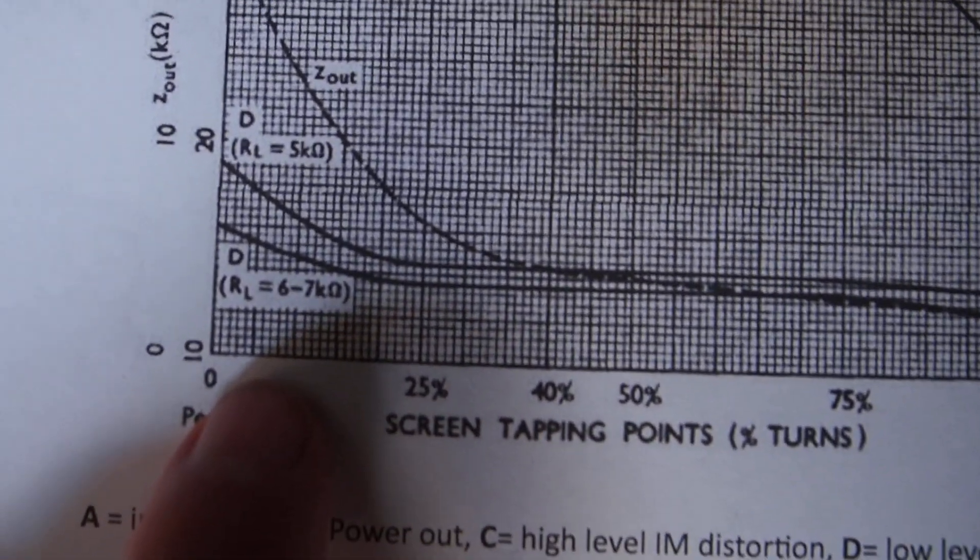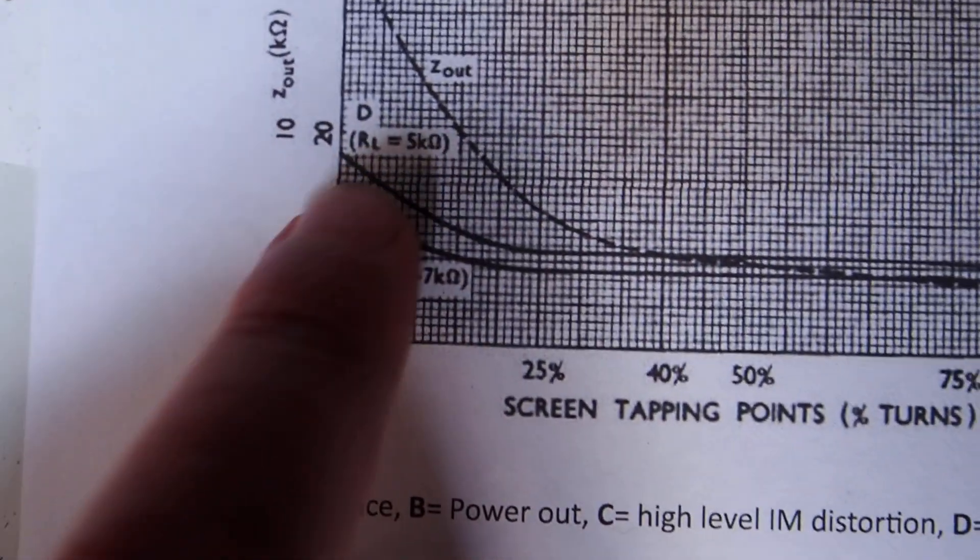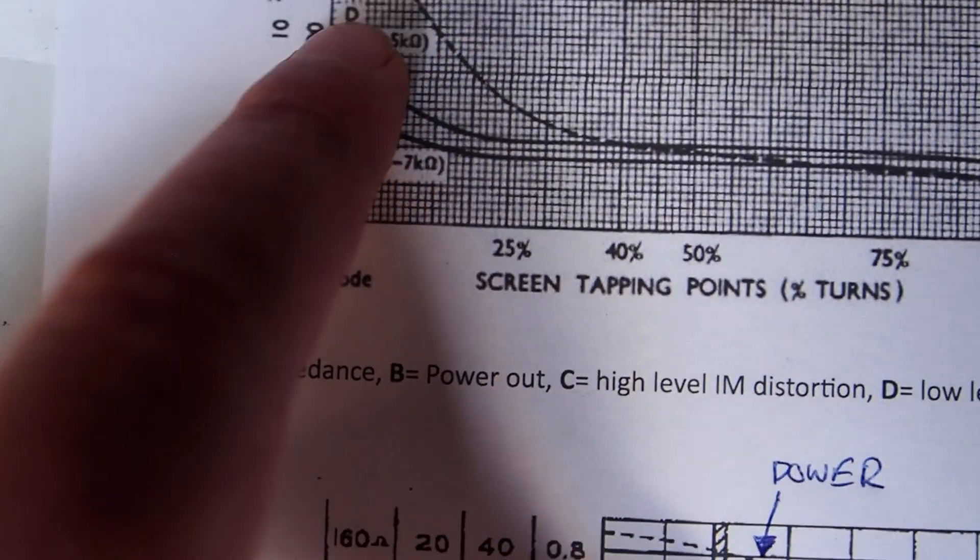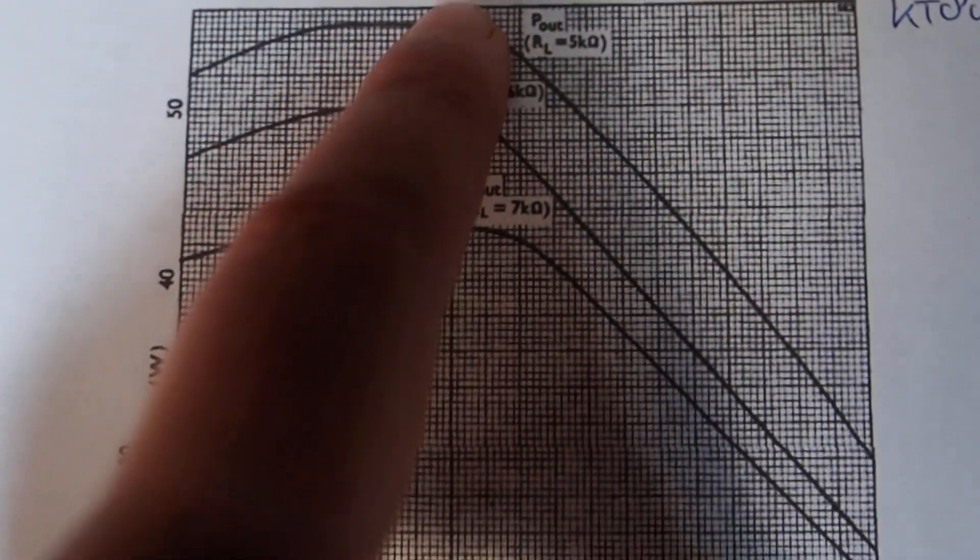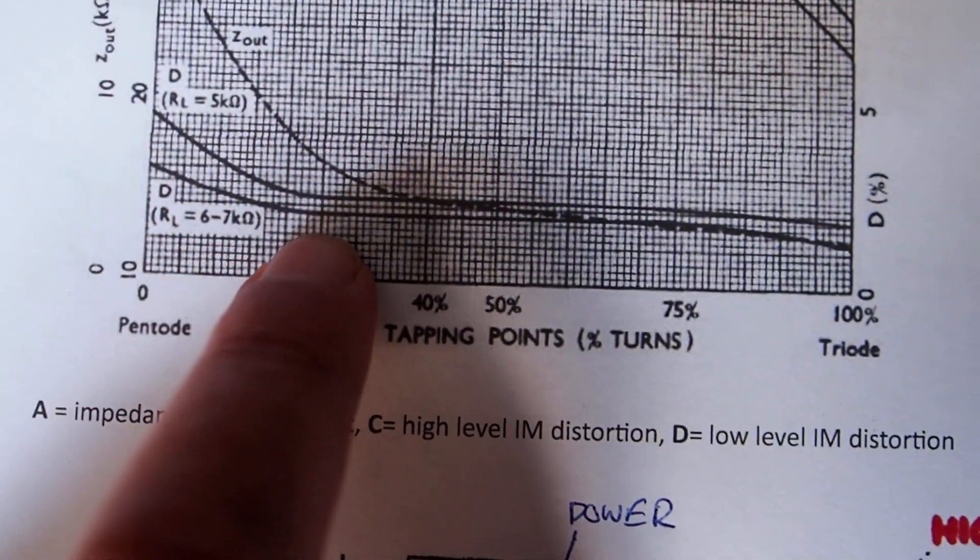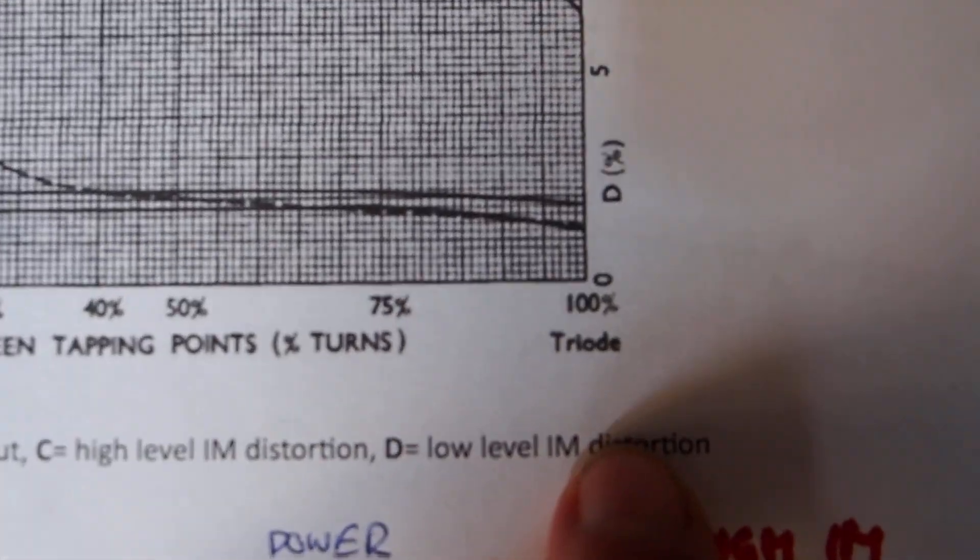Let's look at distortion as well. This is with a lower load with 5k load and this with a 6k load. You can see that the distortion drops as we have the load higher, but we get also less power. But you can see, after 25 percent, we basically end up with the same distortion level as a triode.